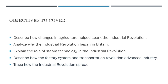Moving on to why the Industrial Revolution began in Britain, several interwoven factors contributed to its initiation in this region. Britain had an abundance of natural resources, including coal and iron ore, crucial for industrial development. Additionally, it possessed a stable political climate, a vast colonial empire that provided raw materials and markets, as well as a strong central government. Furthermore, Britain's geographical location and its network of navigable rivers provided easy access to trade and transportation, facilitating the movement of goods and resources crucial for industrial growth.